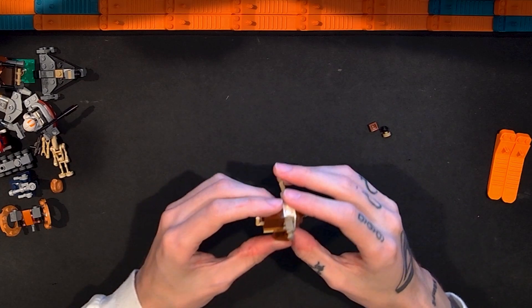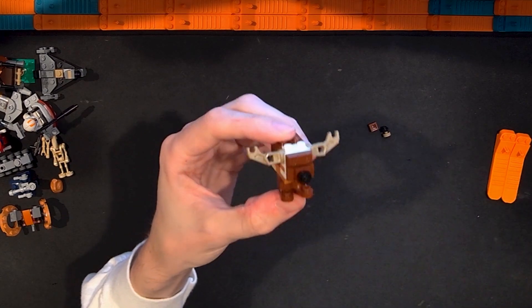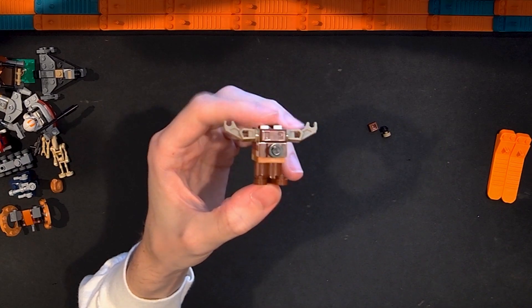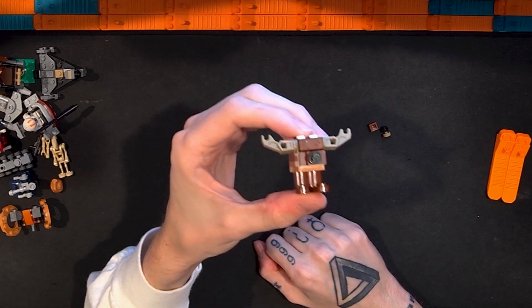But anyway we do have the day 12 build here. This looks to be like a little gonk droid and I believe it is supposed to be a reindeer here.